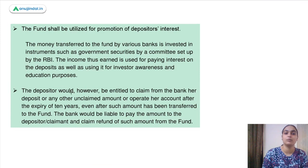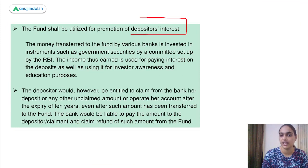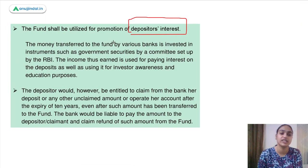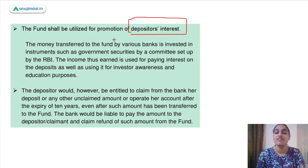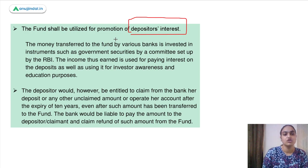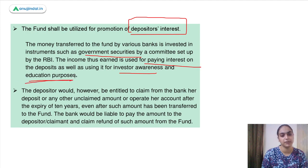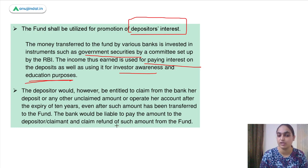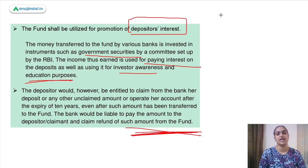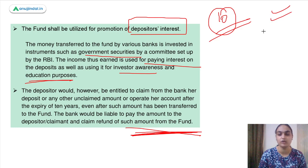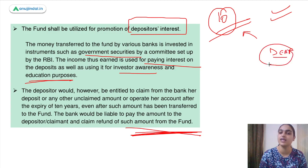The DEA Fund — Depositor Education and Awareness Fund — will be utilized to promote depositors' interest. The money transferred to the fund is invested in instruments like government securities, and the income earned is used for paying interest on deposits as well as for investor awareness and education purposes. The depositor can however claim the amount from the bank even after 10 years, and the bank will be liable to pay that amount, recovering it fully from this fund.